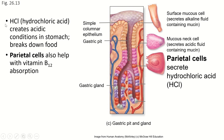The cells that create stomach acid are called parietal cells. They're down in the gastric glands and they produce hydrochloric acid that is released into the pit and then into the stomach lumen. These cells also help with the absorption of vitamin B12, so they are really, really important.